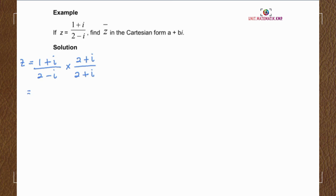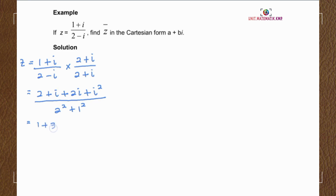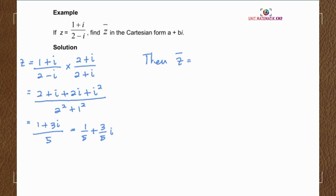Multiplying out, the numerator gives 2 plus i plus 2i plus i squared, and the denominator is 2 squared plus 1 squared. Simplifying, we get 1 plus 3i over 5, so z equals 1 over 5 plus 3 over 5 i. To find the conjugate z-bar, we simply change the sign of the imaginary part, giving z-bar equals 1 over 5 minus 3 over 5 i.